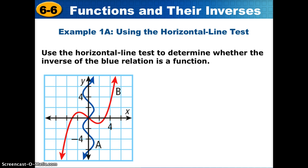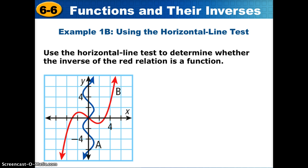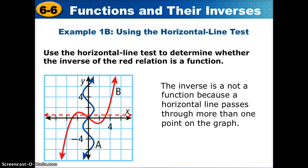Let's take a look at example one. We have two curves: A, which is blue, and B, which is red. We want to use the horizontal line test to determine whether the inverse of the blue relation is a function. We scroll the horizontal line through relation A and determine that the inverse of A is, in fact, a function. Then we look at B. B passes the vertical line test, so it is a function. But when we use the horizontal line test, we see that it fails — so we know the inverse of B is not going to be a function.